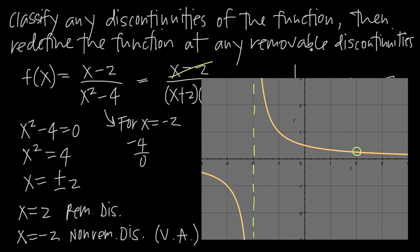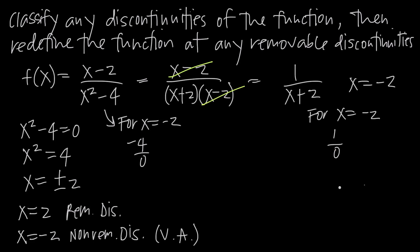The original problem also asked us to redefine the function at any removable discontinuity — meaning, what value would the function need at x equals 2 to make it continuous there? If we plug x equals 2 into the original function, we get 0 in the numerator and 0 in the denominator, giving 0 over 0. Whenever a value gives 0 over 0 in the original function, that's a good indication of a point discontinuity at that value.